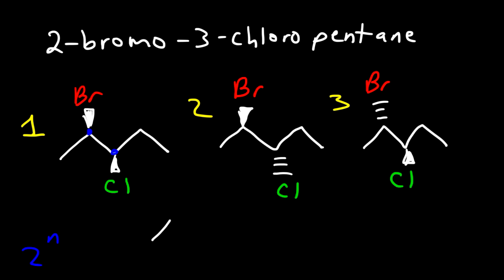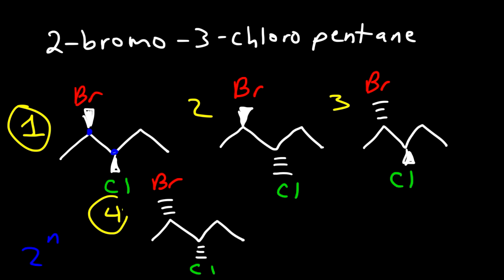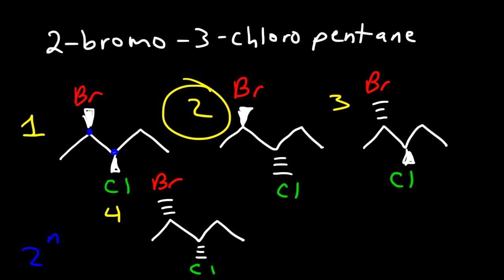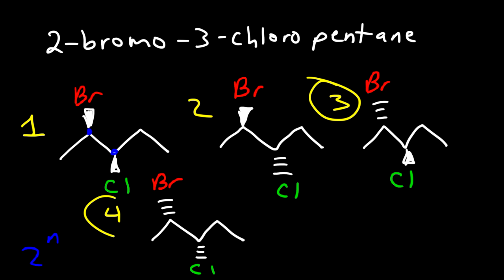Now we can draw one more stereoisomer. Let's put the bromine atom in the back and the chlorine atom in the back as well — going into the page. Compounds 1 and 4 are enantiomers because all of the chiral centers have changed and there is no internal plane of symmetry. Compounds 2 and 4 are diastereomers because they differ by only one chiral center, and compounds 3 and 4 are also diastereomers.